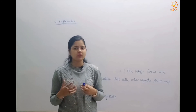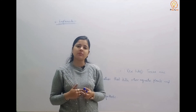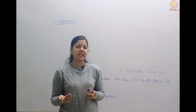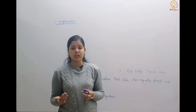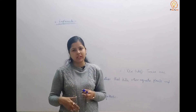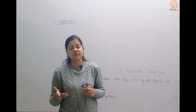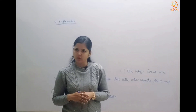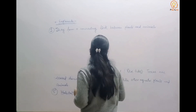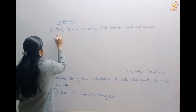Because euglenoids have similar photosynthetic pigments to plants, they are capable of fixing light energy and converting it into food. When they get light, they behave as autotrophs and carry out photosynthesis. But when they are devoid of light energy, they behave as heterotrophs and are dependent on autotrophs for food and nourishment.